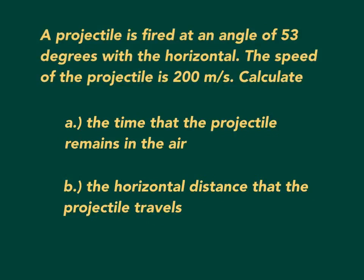Now it's your turn. Try this problem and show me the solution when you come back to class. A projectile is fired at an angle of 53 degrees with the horizontal. The speed of the projectile is 200 meters per second. Calculate first the time that the projectile remains in the air, and second the horizontal distance that the projectile travels.